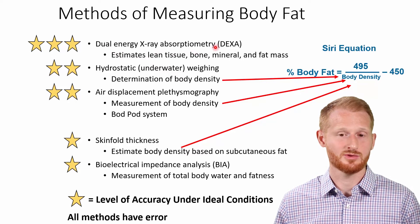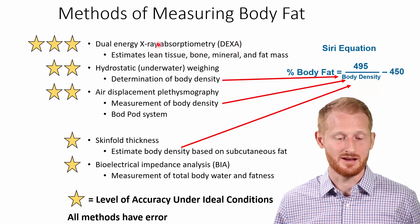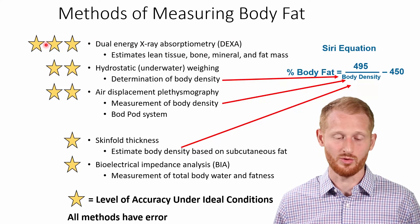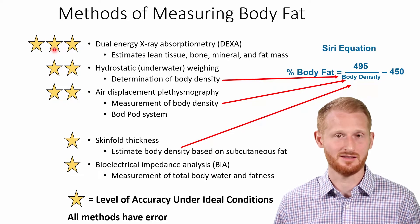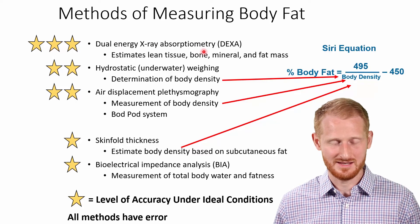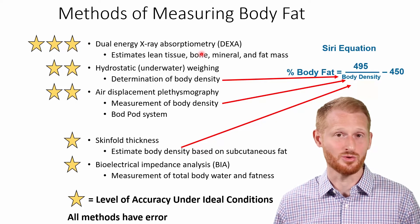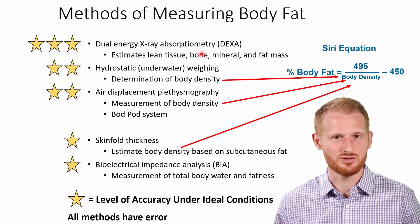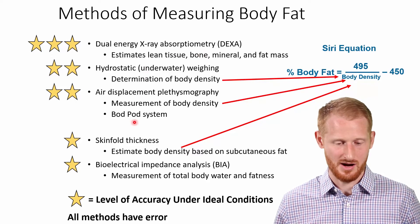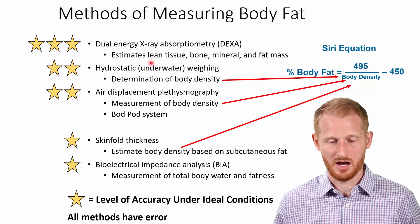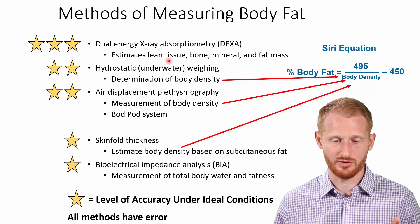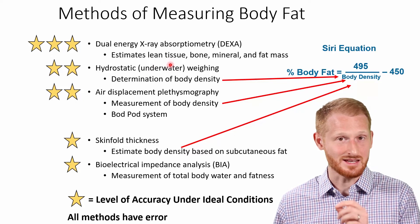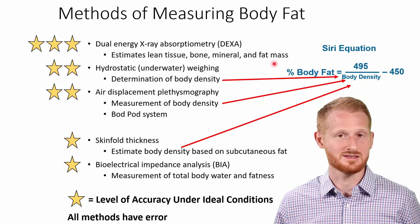Dual energy x-ray absorptiometry, or DEXA, is probably the current gold standard for body fat assessment. MRI is probably as good if not a little better than DEXA, but it's not used outside of research settings often because it's so expensive. DEXA is typically only used in clinical and research settings, but it's useful as a gold standard to compare other methods against. It's good for assessing body fat percentage, lean tissue, bone, mineral, and fat mass.